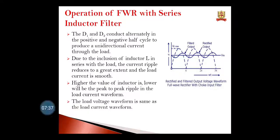Here you can see the output waveform across the load resistor — that is the filter output. There are very small ripples at the output, and this is how it converts AC into DC which is very close to DC, but it is not perfect DC.